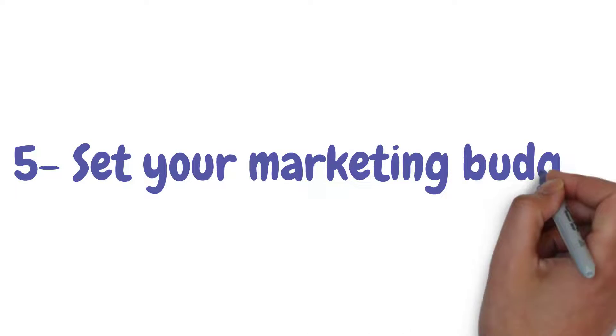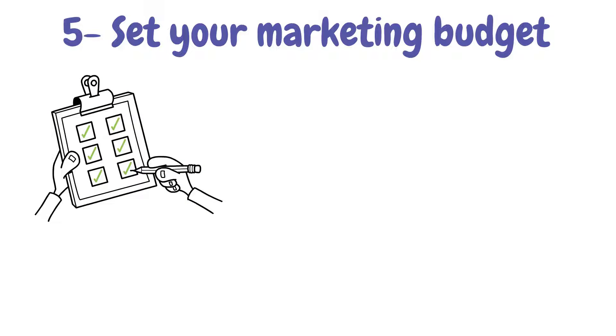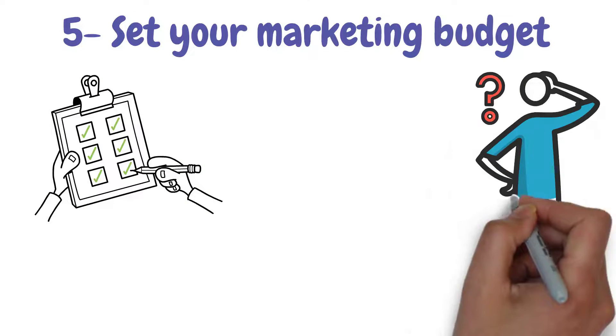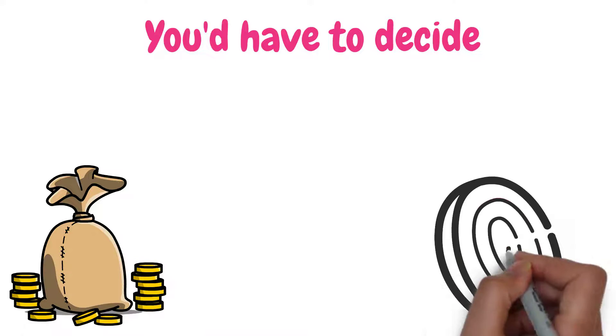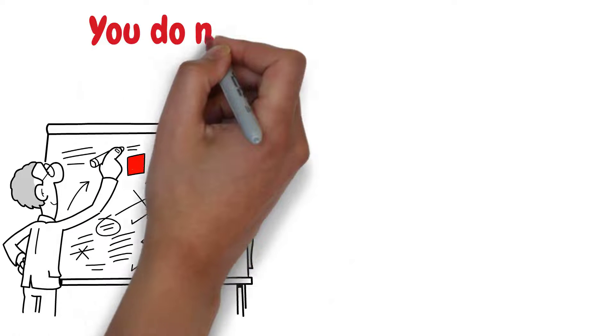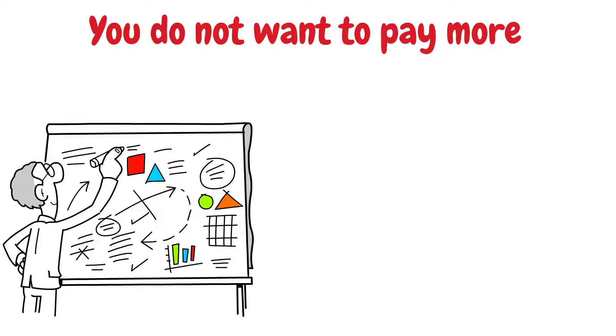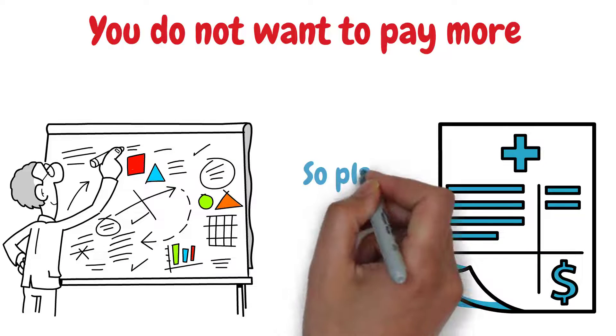Five, set your marketing budget. This is the most important part of any marketing strategy. It is where you'd have to decide how much you are able to afford to spend on your marketing campaign. During this step, you'd have to decide how much money you are willing to put in order to reach your goal, which should ultimately help your business thrive. So plan carefully for you do not want to pay more than your business can afford. You should by now know all costs of every marketing medium, so plan accordingly.